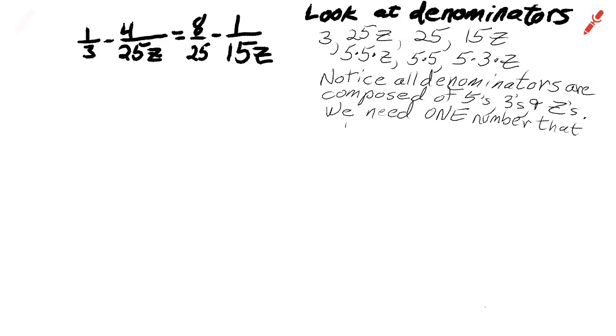What we're going to do with that number is multiply both sides of the equation by a number that will cancel out all the denominators.